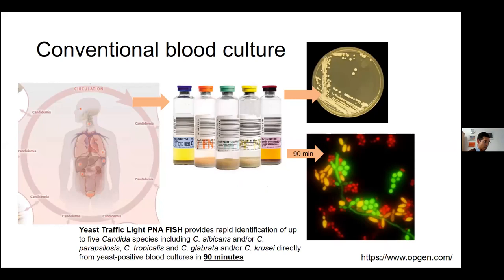You may have heard of the yeast traffic light PNA-FISH system — a peptide nucleic acid fluorescent in situ hybridization technique. Once a positive blood culture is obtained, instead of doing a Gram stain, you heat-fix a drop of blood on a glass slide, add a drop of the probe, incubate for 30 minutes at 55 degrees Celsius, wash, and then view under a fluorescent microscope.